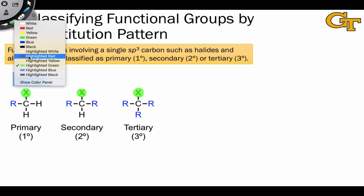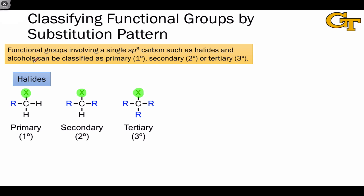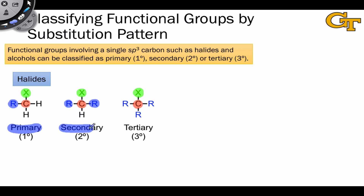We can talk about the central carbon atom in an alkyl halide — the one bound to the halogen atom — as being either primary, secondary, or tertiary. The nomenclature here is parallel to the nomenclature we looked at on the last slide. One R group indicates a primary alkyl halide, two R groups is a secondary alkyl halide, and three R groups bound to the carbon that bears the halide is a tertiary alkyl halide.